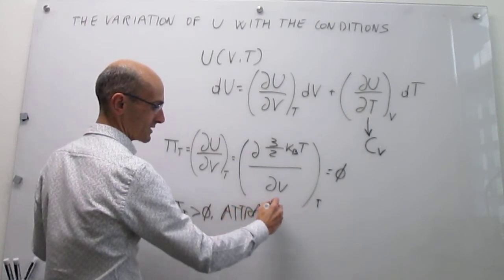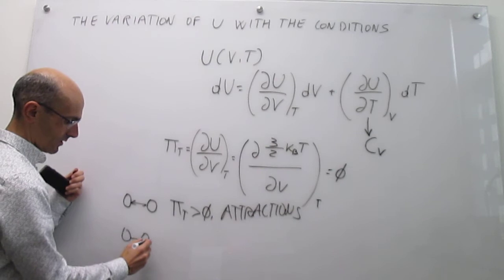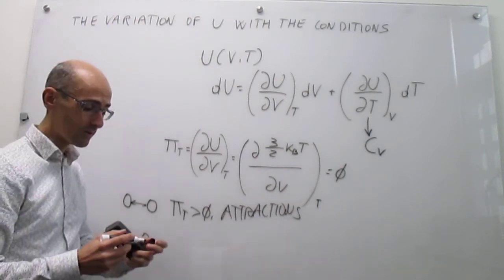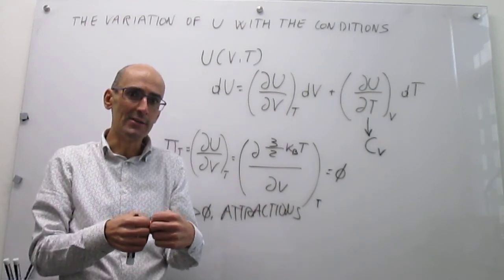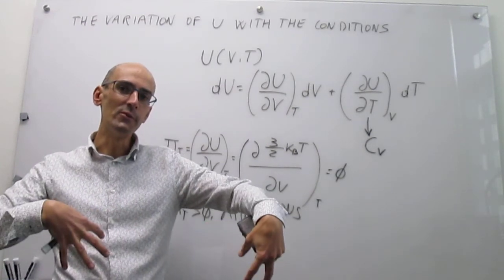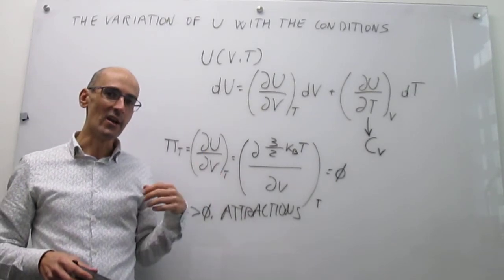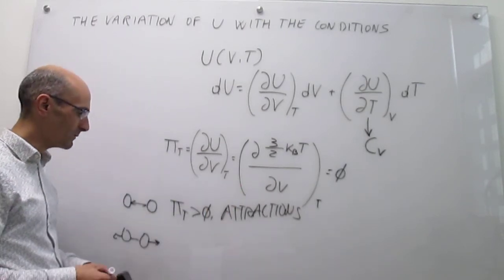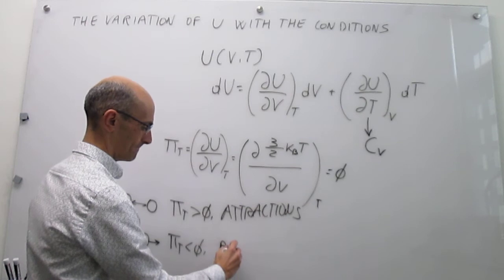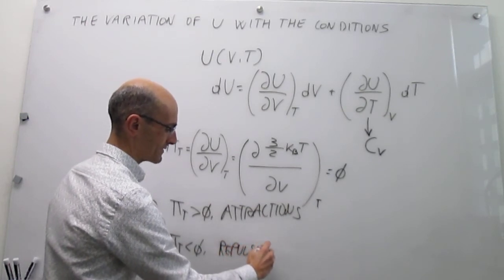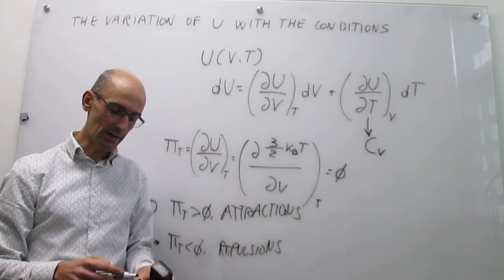The reverse is true for repulsions. Assume the particles are repelling each other — they want to get away from each other. If you calculate how the internal energy changes with volume, those particles want to separate from each other, so increasing the volume gives them more room to move — that should be stabilizing. When you increase the volume, the internal energy goes down, which means π_T will be negative when repulsions dominate. So: ideal gas gives π_T = 0, and for a real gas, attractions give π_T > 0 and repulsions give π_T < 0.